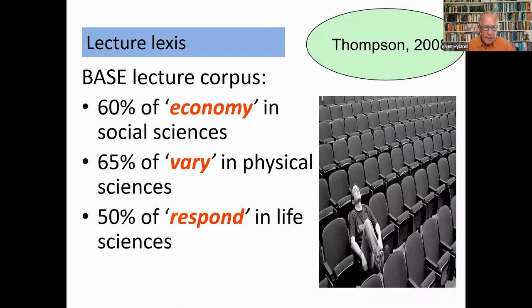Paul Thompson also found similar variations in the distributions of the top 20 content words in the British Academic Spoken English lecture corpus: 60% of occurrences of 'economy' were in the social sciences, 65% of 'vary' in the physical sciences, and 50% of 'respond' in the life sciences. Thinking about specificity of lexis, then, we can help students more accurately by targeting what they actually need.